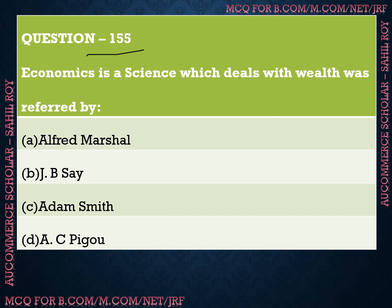Question number 155: 'Economics is a science which deals with wealth' — this definition was given by whom? We have four options: Option A is Alfred Marshall, Option B is J.B. Say, Option C is Adam Smith, and Option D is A.C. Pigou. The correct answer is Option B — J.B. Say gave this definition stating that economics is a science which deals with wealth.